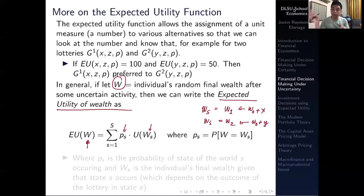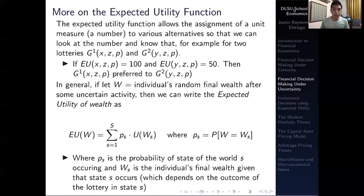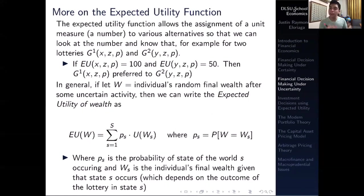You sum all of those with their corresponding probabilities while plugging them into the utility function. Here, ps is the probability of the state of the world in which you receive a particular monetary payoff, and ws is the individual's final wealth given that state occurs — so you have w1, w2, depending on the number of states of the world.